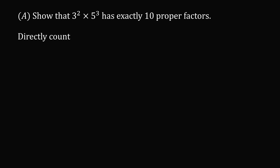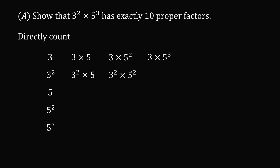It's pretty easy to directly count this because 3 and 5 are prime numbers. So the factors would be 3, 3 squared, 5, 5 squared, and 5 cubed. We have 3 times 5, 3 times 5 squared, 3 times 5 cubed, 3 squared times 5, and 3 squared times 5 squared. These are 10 proper factors. We don't count 1 and we don't count 3 squared times 5 cubed.